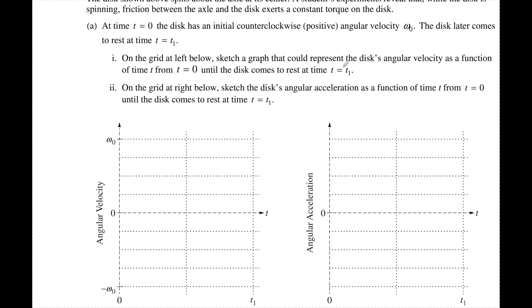On the grid to the left, sketch the graph that could represent the disc's angular velocity as a function of time from time zero until it comes to rest. So we started with some positive angular speed, we ended at rest, and we had a constant torque. So the slope, the fancy physics word for slope for a V versus T graph is acceleration. So if F net, the torque force is constant, that means that A has to also be constant, but it's going to be negative because it slows the object down. So we're just going to have a straight linear line that acts just like this.